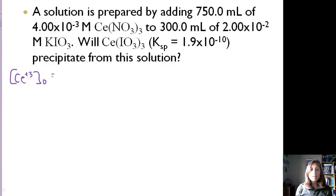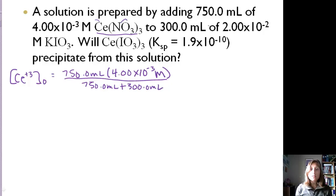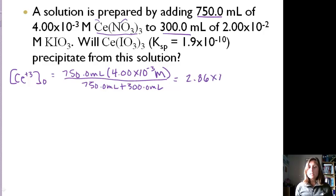The initial concentration of cesium is in moles per liter. In cesium nitrate we have 4×10⁻³ molar, and we add 750 milliliters of that — so 750 mL × 4×10⁻³ M gives us moles. Cesium nitrate dissociates into 1 part cesium and 1 part nitrate. The total volume is 750 mL + 300 mL = 1050 mL. Dividing gives us 2.86×10⁻³ M for cesium.